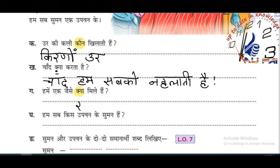Kamei ek jai se swadu milta hai, hum sabko nakalati hai. We all are the flowers of which garden? They all are the flowers of one garden — that means they all are the children, the kings of their countries, kings of our countries.